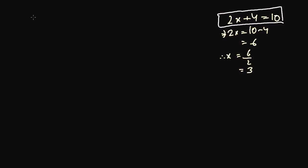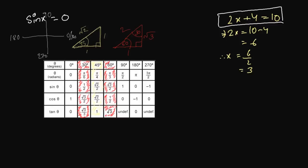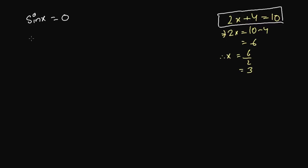Similarly, when we have an equation like sin x equals 0, you have to find the specific value — you cannot say any value of x would do, because it won't. There are certain values for which this equation becomes true. Looking at common angles, sin 0 happens at 0 degrees, it happens at 180 degrees, and also at 360 degrees. You should have these memorized as common angles, so you can simply write x equals 0°, 180°, or 360°.